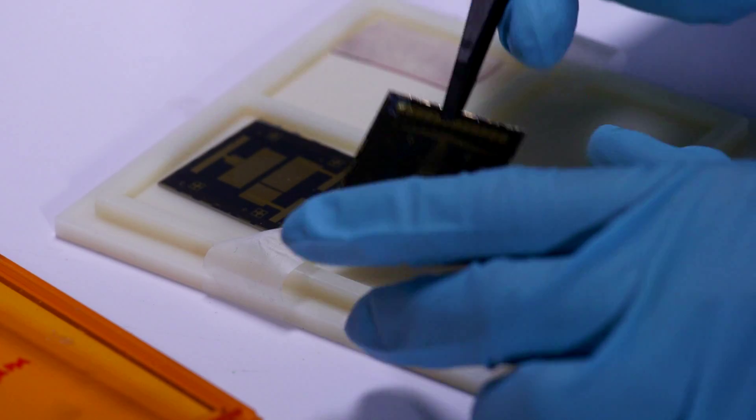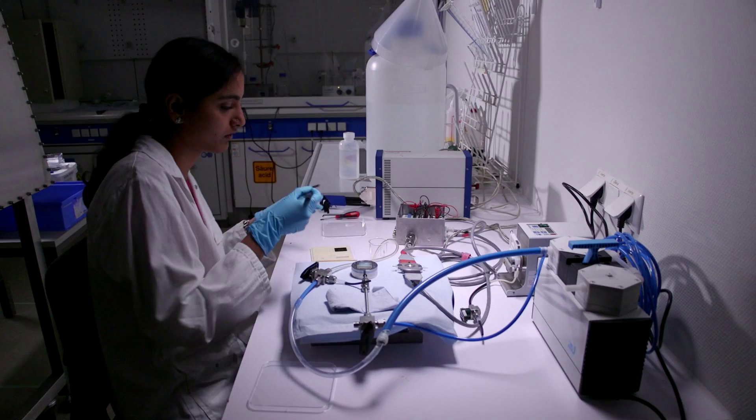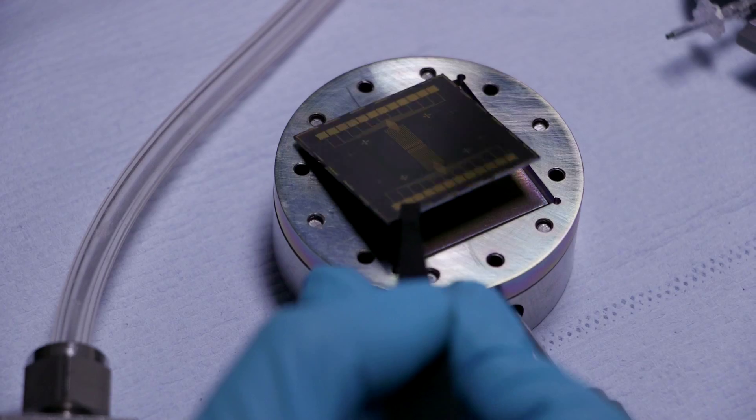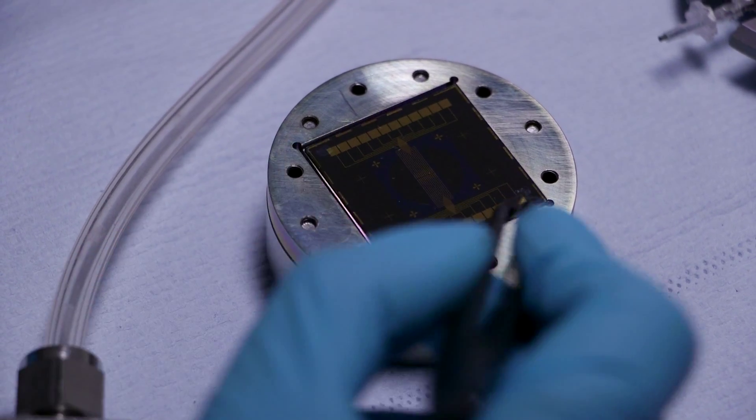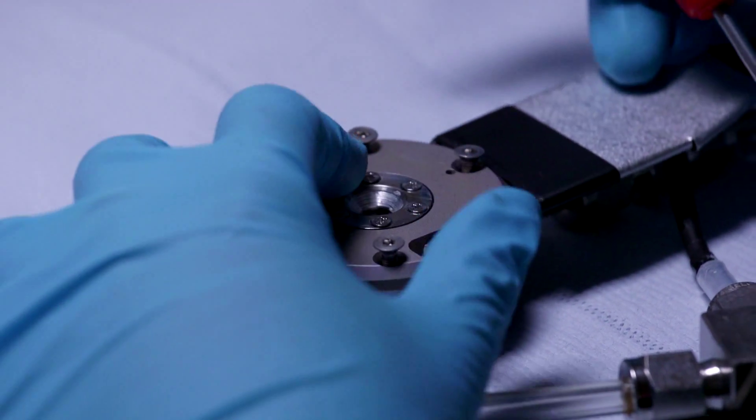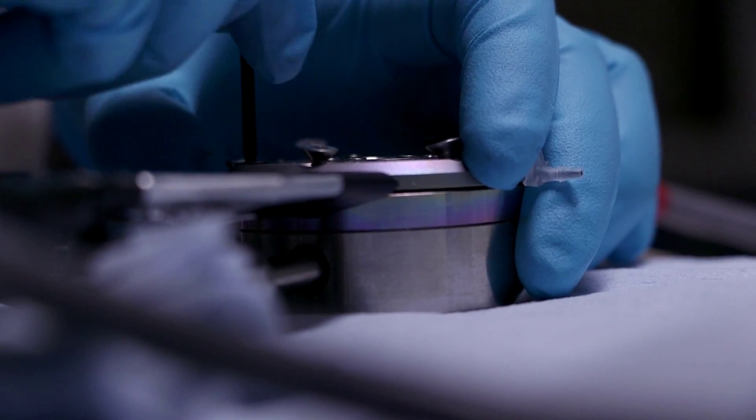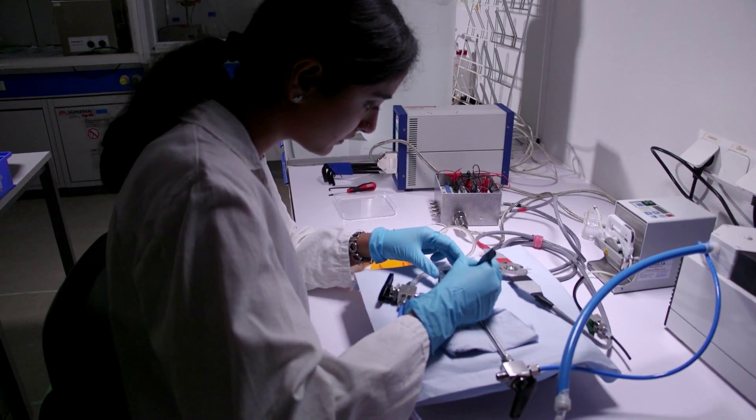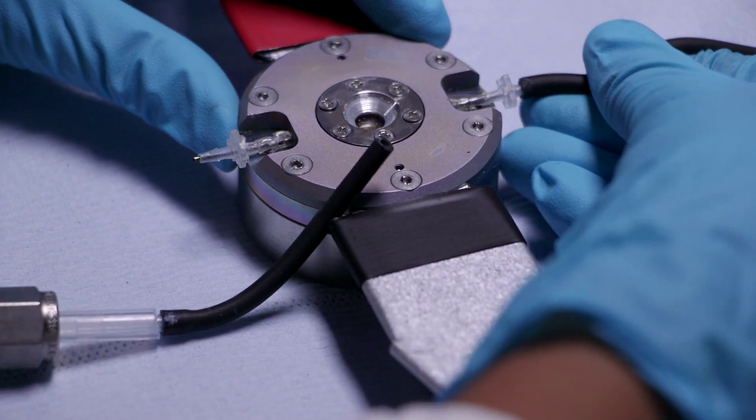The process of sensing begins with the creation of a biorecognition part in which you have to put the molecules which are selective to the analytes that you want to detect on your sensor. And if your sensor is complex, then you don't have to put one, but you have to put many of them.